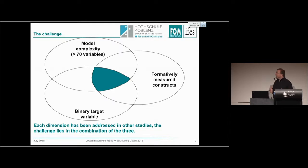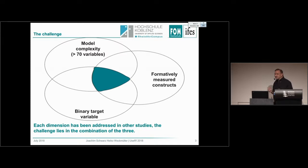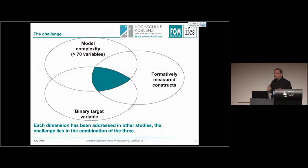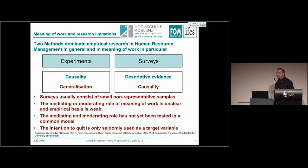The challenge: we have many variables and high model complexity — more than 70 latent variables. All constructs were formatively measured; none were reflectively measured. And we had a binary target variable. Of course, analysis approaches exist for complex models, for formative measurements, and for binary targets individually, but the challenge lies in the combination of the three. To my knowledge, this hasn't been done very often before.